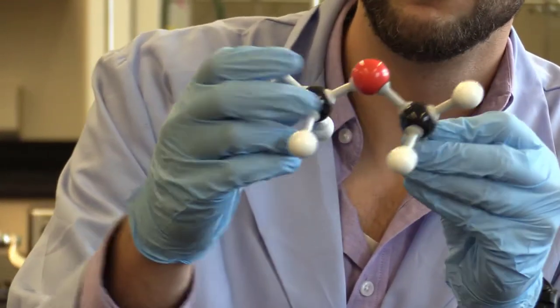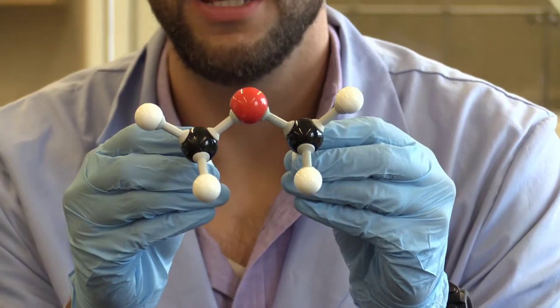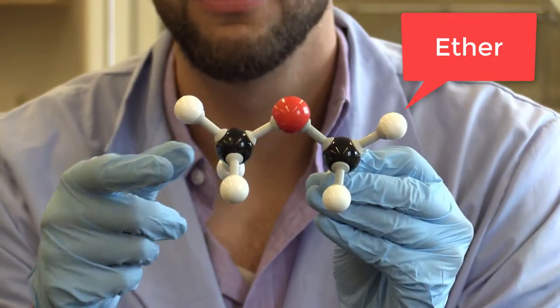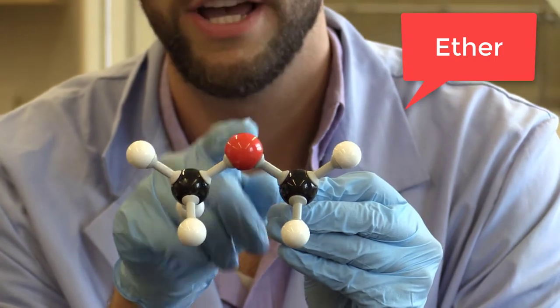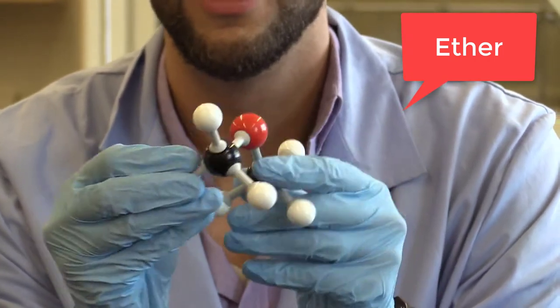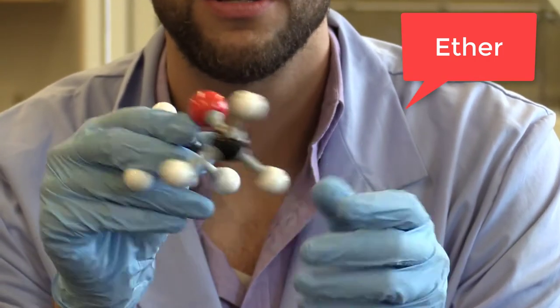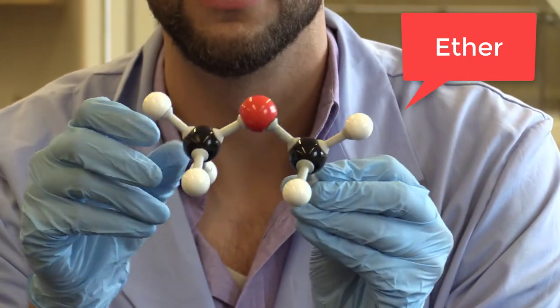Our next molecule is an ether. Again, we have our two carbons in black, one there, one there. Our red for our oxygen. And then three hydrogens and three hydrogens for a total of six.